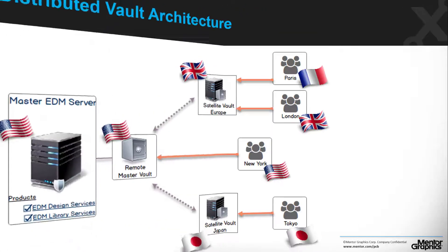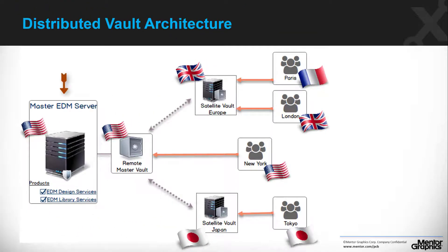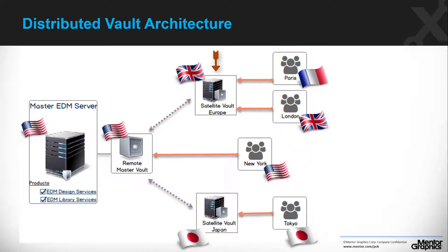Let's review the architecture. The master XDM server on the left is deployed with a remote master vault — in our example in the USA. Clients in New York will directly work with the master vault. Two more satellite vaults are deployed: one in Europe and one in Japan. Clients working in Paris and London will download and upload data from the European satellite vault, while clients in Tokyo will use the satellite in Japan.